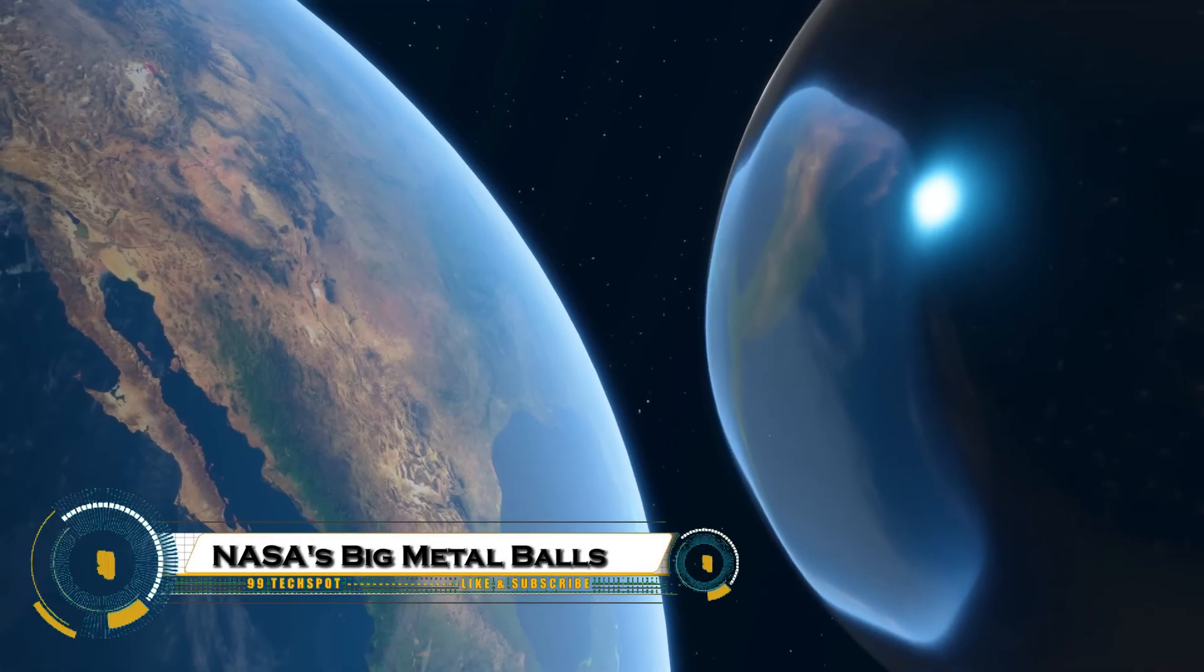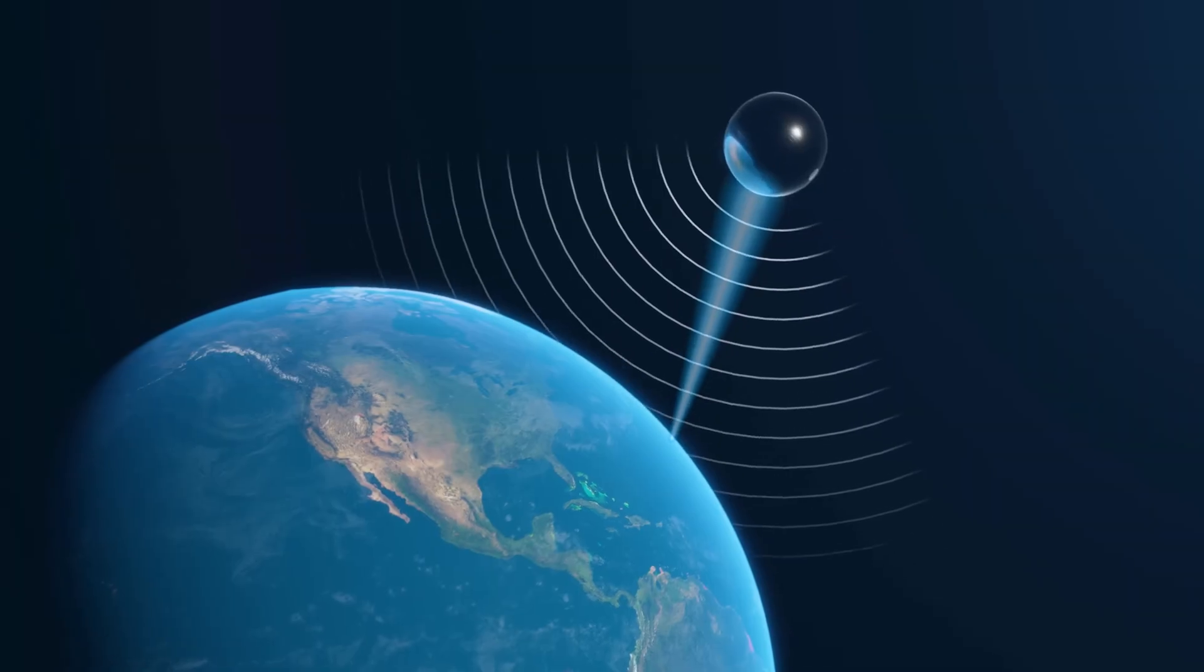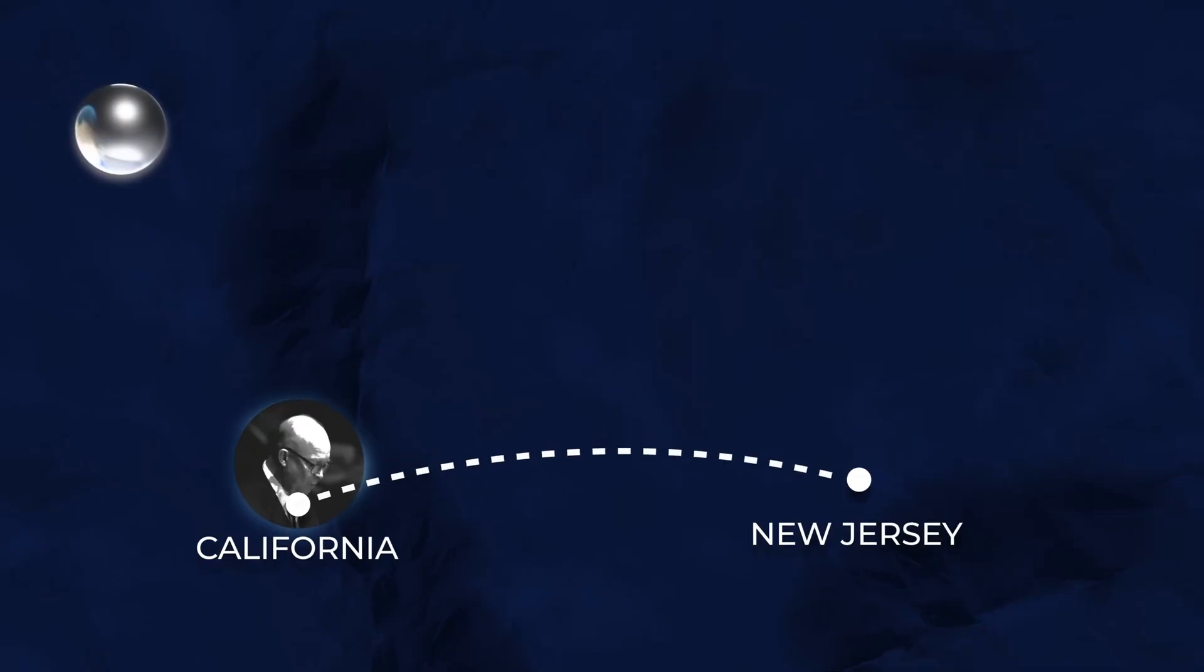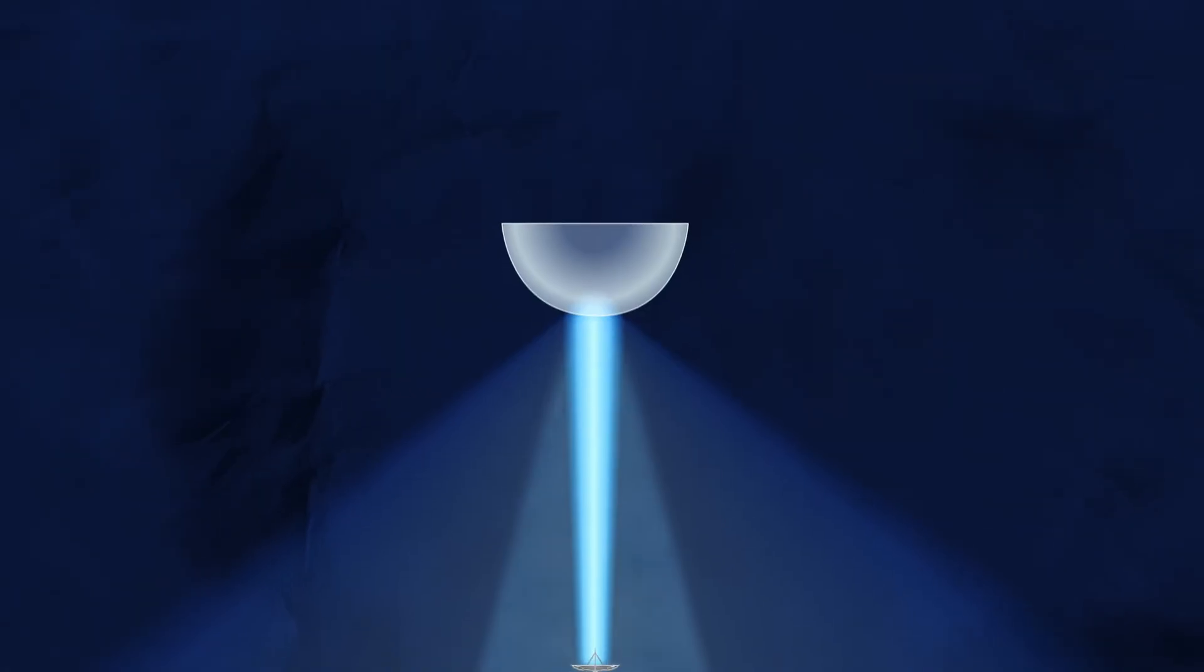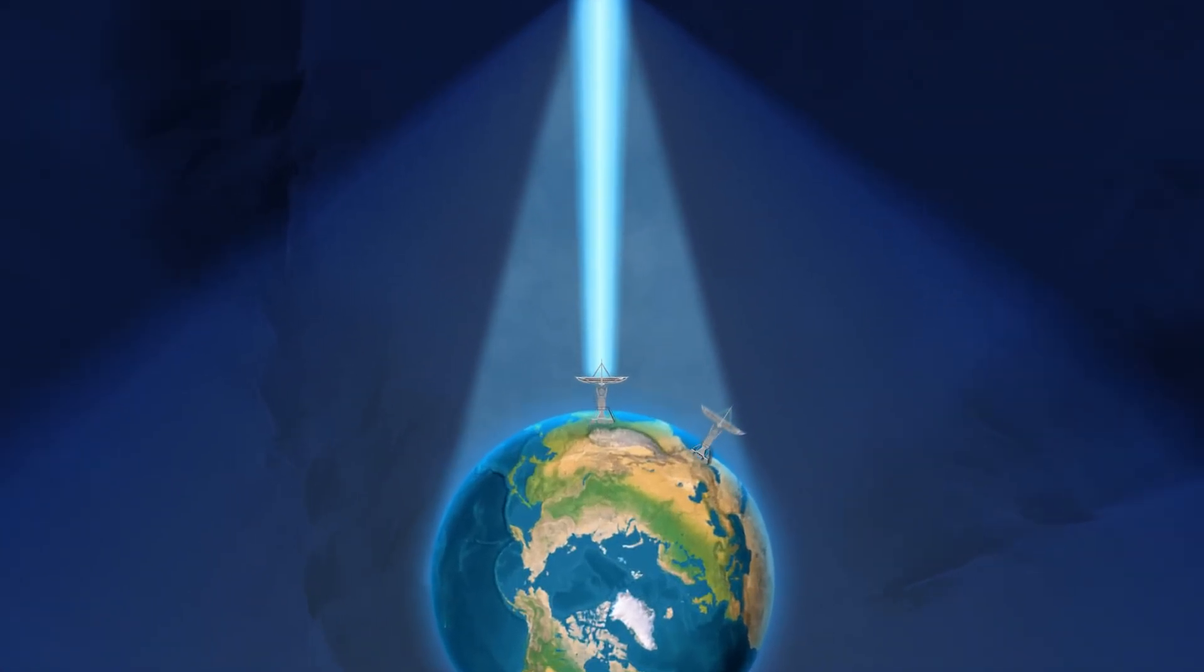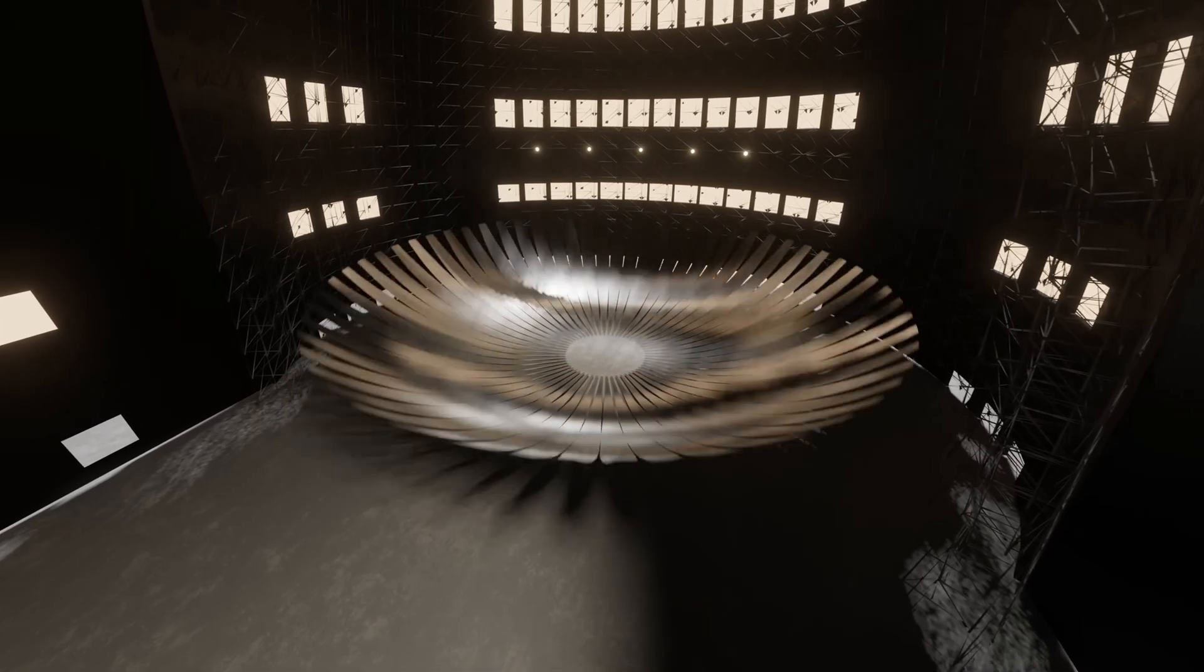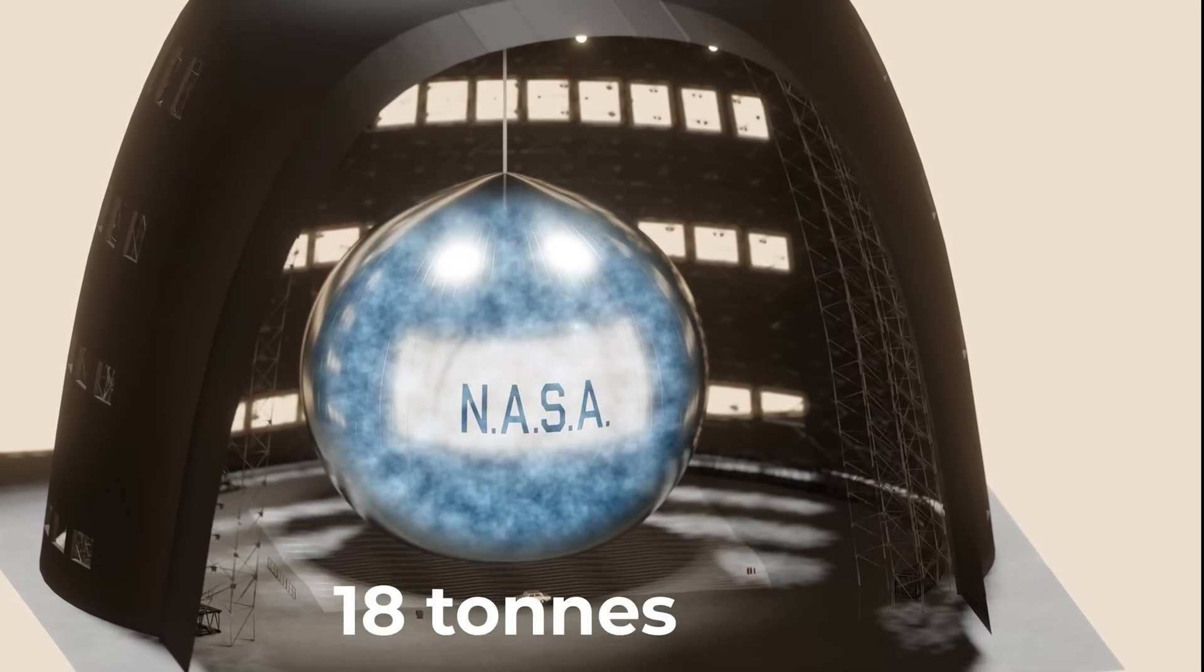NASA's Big Metal Balls are a fascinating and futuristic project designed to study the mysteries of the solar system in a whole new way. Officially known as spherical probes, these metal spheres are engineered to withstand extreme conditions while traveling through space. Unlike traditional spacecraft, their rounded design provides superior durability, allowing them to bounce, roll, or even survive high-impact landings on alien surfaces like asteroids or moons.